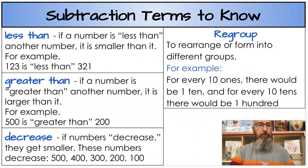Next, these are our new terms for this unit. We have the word less than. If a number is less than another number it's smaller. For example, 123 is less than 321. It's smaller than that number so it's less than. Greater than: if a number is greater than another number it is larger than it. For example, 500 is greater than 200. It's bigger, so it's greater than that number.